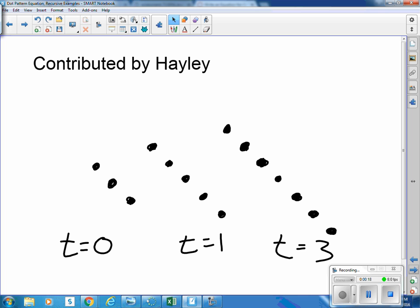So at time zero we have three dots. At time one, maybe after one minute or one second, we have five. And then at time three we have seven.